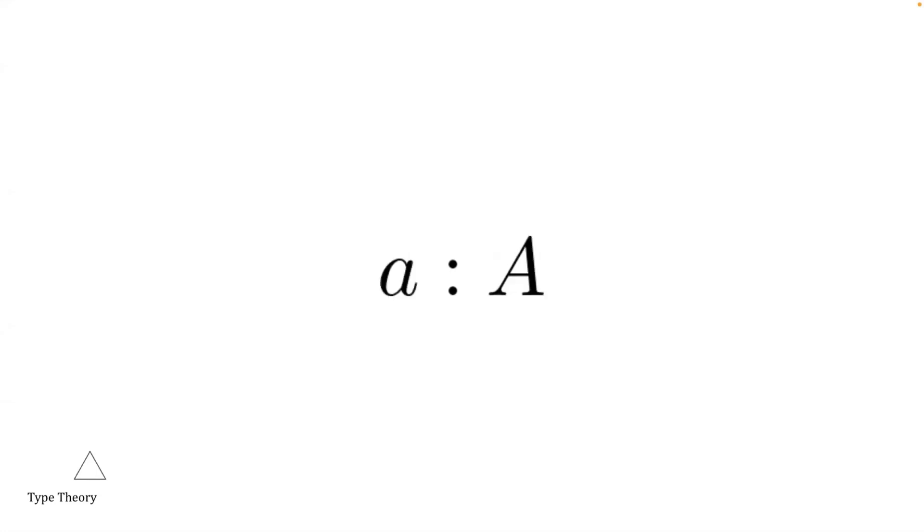Thus, if you have some mathematical theorem, big A, and you are able to construct a witness, little a, you have proof a theorem.